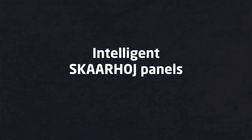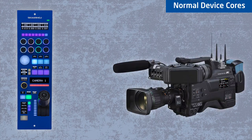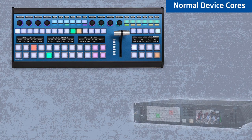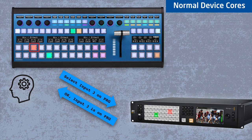RAW Panel Mode is different from how Skyhoy panels normally work. So if you take a Skyhoy RCP that controls a camera, you have to know the command set of the camera. For instance, when the iris joystick is moved, the panel will send a command like 'set iris to f8,' and the panel answers back 'done, iris is now f8.0.' All the intelligence and logic is implemented in the Skyhoy controller.